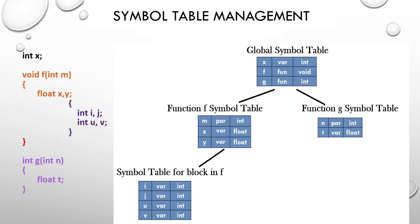Once the inner block finishes, its symbol table is popped. For function g, we maintain another symbol table on the right-hand side of the global symbol table. It has a parameter n of integer type and a variable t of float type. Whenever g is called, its symbol table is maintained, and when g finishes, the symbol table is popped. The overall structure looks like a tree.